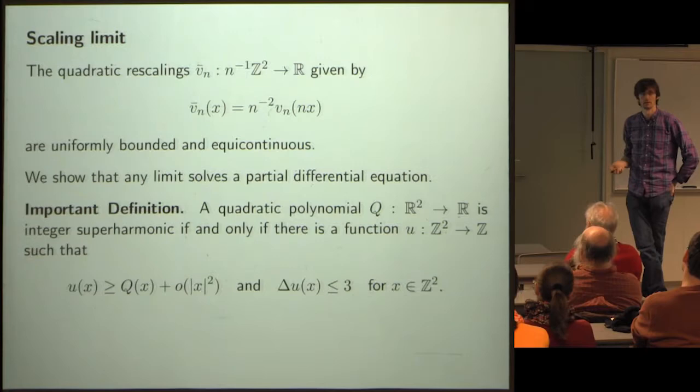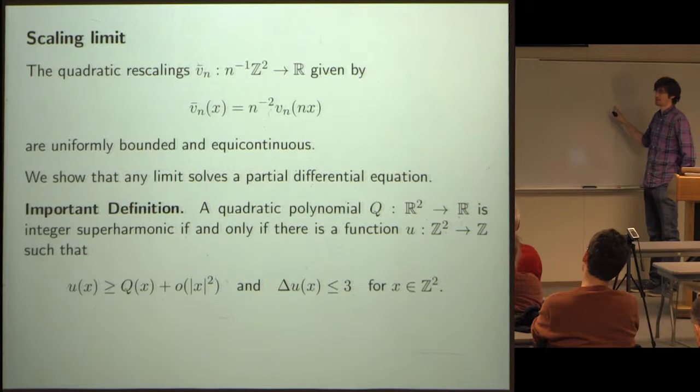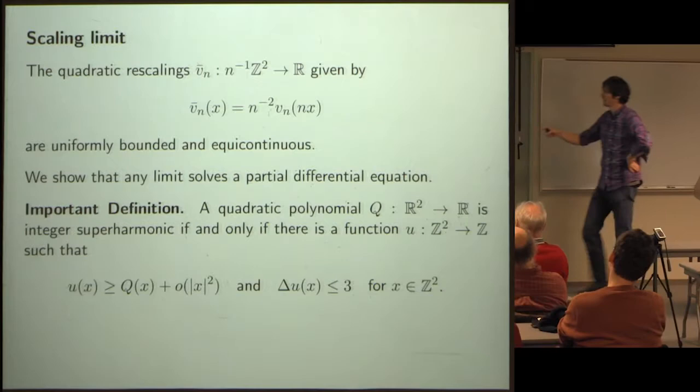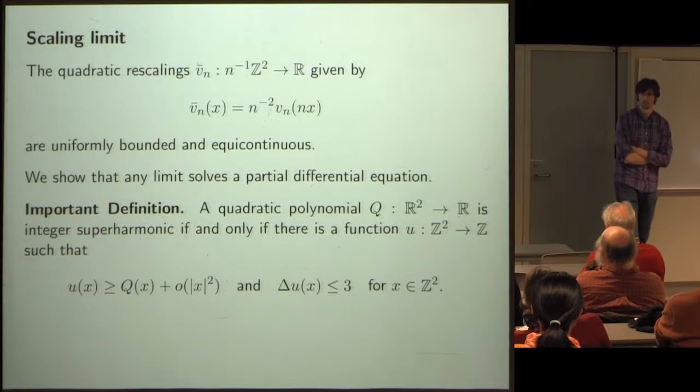An audience member asks: what if you changed that 3 to a 5? For the square lattice, the answer is no — the theory doesn't change — because you can always add the function with graph Laplacian identically one to both sides, which just shifts the set of quadratics by that polynomial. Similarly, if you change it to a 2, you can subtract instead of add.